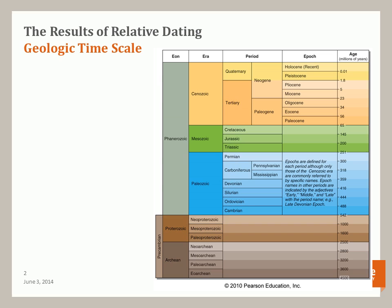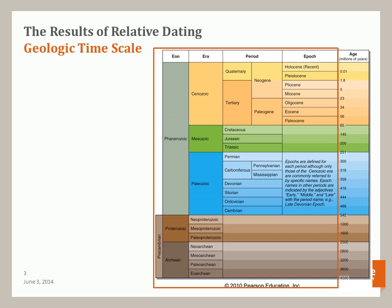Here is the geologic time scale that we discussed in talking about relative age dating. Through relative age dating, geologists developed the scale shown in the orange box by correlating and using the principles of relative age dating, doing a lot of work across the whole world. What they didn't have then was the actual absolute ages of these features — and that's the goal of this lecture.